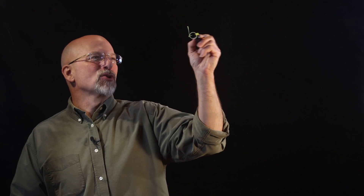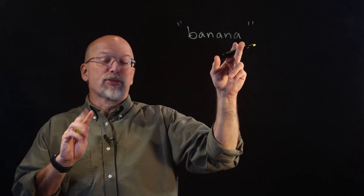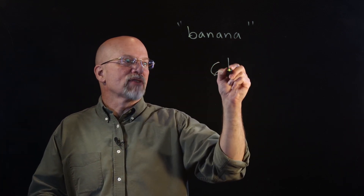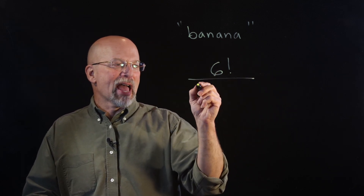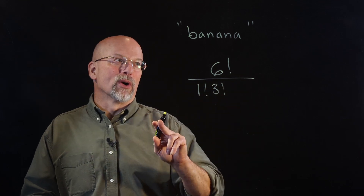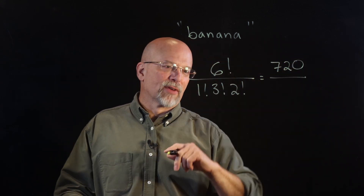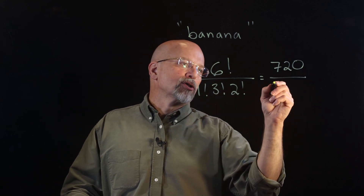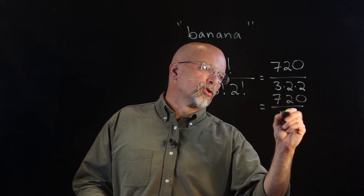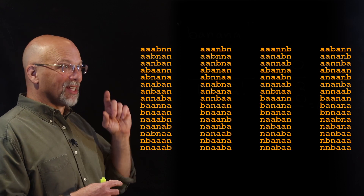Let's do one more: sorting the letters in the word 'banana.' There's one B, three A's, and two N's — six letters total. So it's 6! / (1! × 3! × 2!) = 720 / (1 × 6 × 2) = 720 / 12 = 60. There are 60 different ways to arrange the letters in 'banana.'